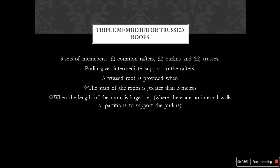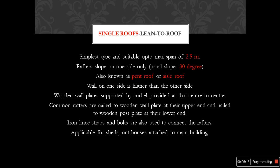A truss roof is provided when the span of the room is greater than 5 meters, and especially when the length of the room is large and there are no internal walls or partition walls to support the purlins. A single lean-to roof is the simplest type, suitable for spans up to 2.5 meters, with a rafter slope on one side that can be used up to 30 degrees. It is also known as pent roof.